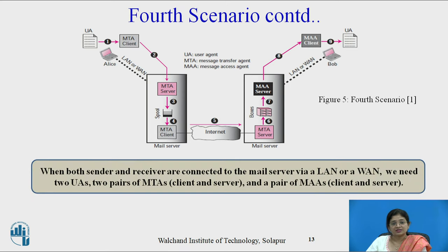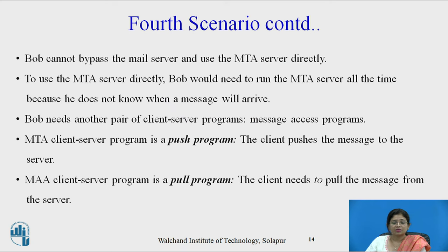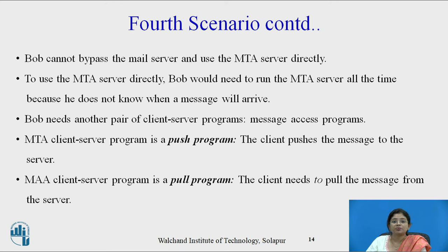When both the sender and the receiver are connected to mail servers via LAN or WAN, we need two user agents, two pairs of MTAs (client-server programs), and a single pair of message access agents (also a client-server program). Bob cannot bypass the mail server and use the MTA server directly, which is why Bob needs to run the MAA. MTA client-server is a push program — the client pushes the message to the server — while MAA client-server is a pull program, because the client needs to pull the messages from the server.